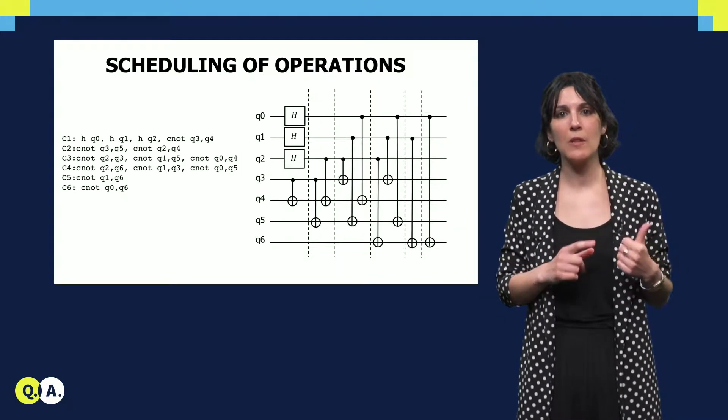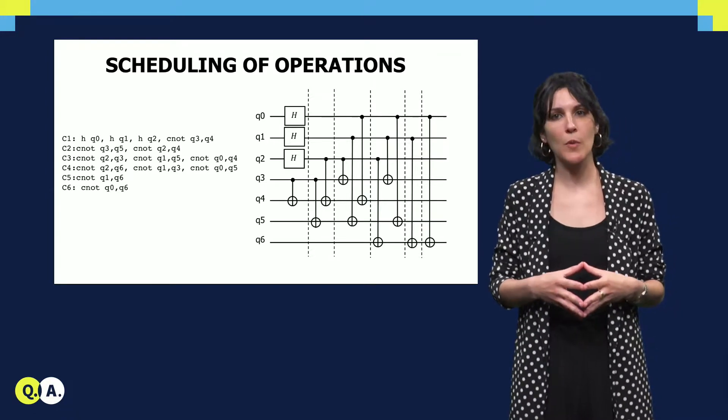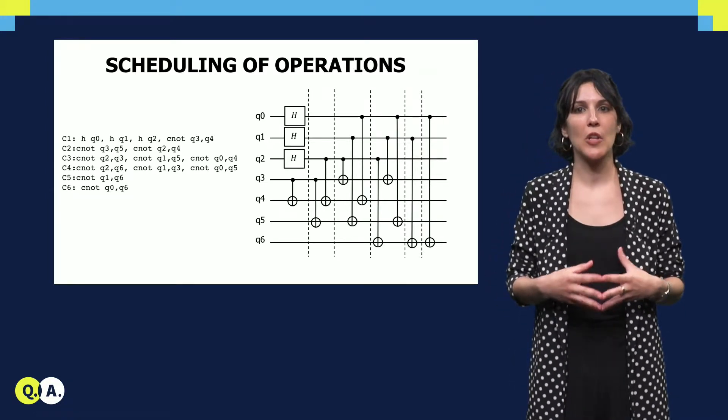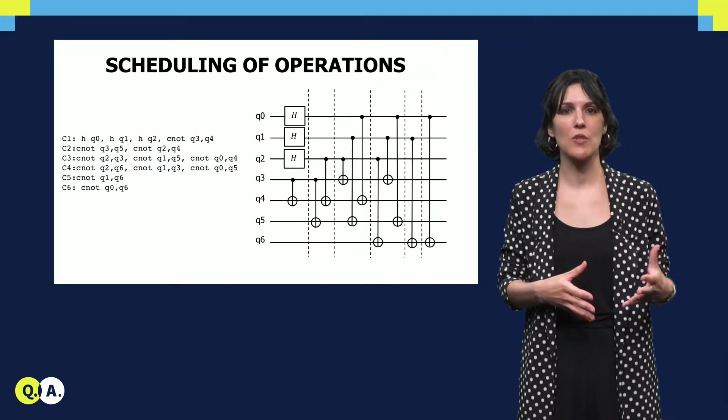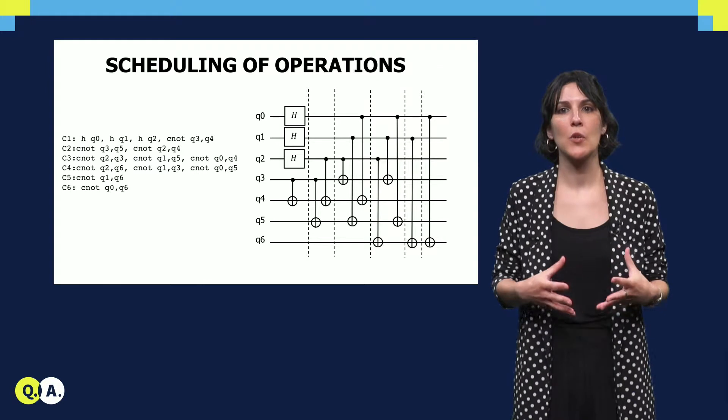In our example, the operations have been scheduled using an as-soon-as-possible technique, and this is the resulting circuit and the corresponding instructions. In our case, six cycles are required for the execution of the circuit.